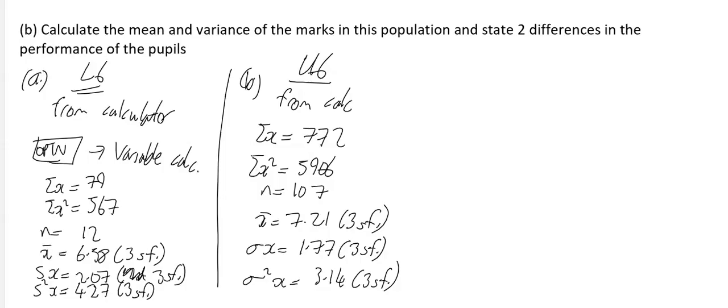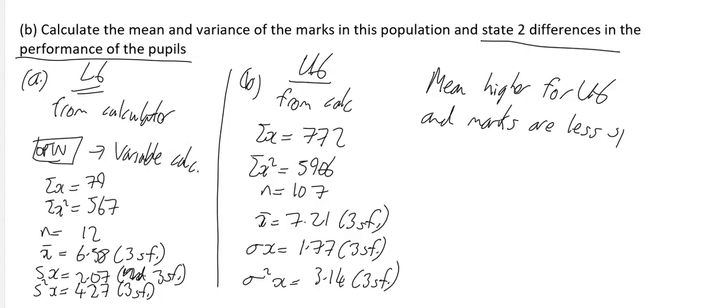The last thing it says is state two differences in the performances of the pupils. I would say the mean is higher for the upper sixth pupils, and the marks are less spread out as the standard deviation is smaller. You're now ready to do your work.